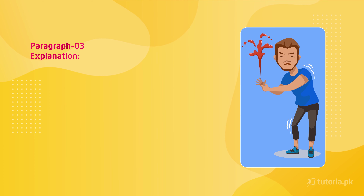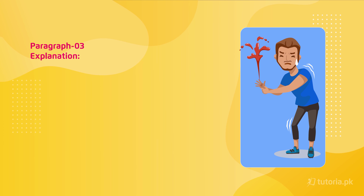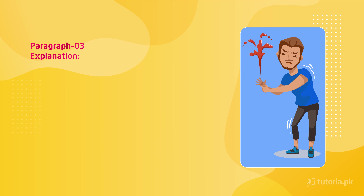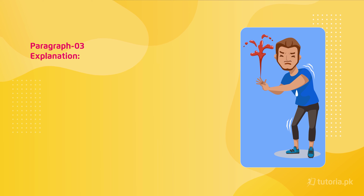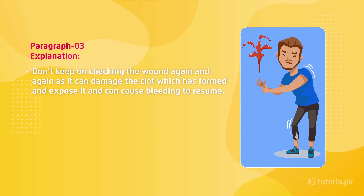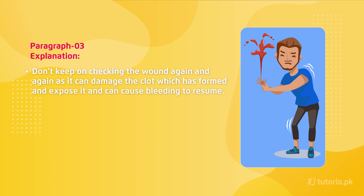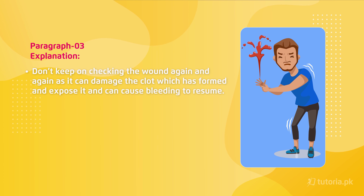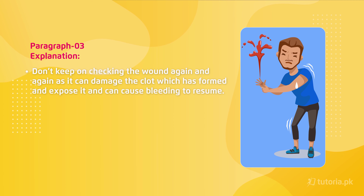For example, I have got a scratch or cut on this hand — toh main is ko is position mein rakhoongo, is mein nahi rakhoongo. Kyunke agar aise rakhoongo toh bleeding will continue and it will not stop. Is tareeqe se bleeding will stop fast.